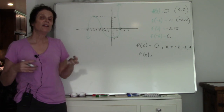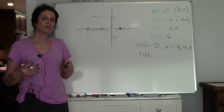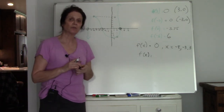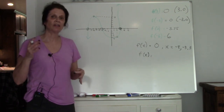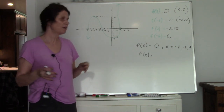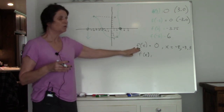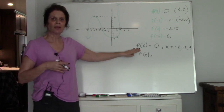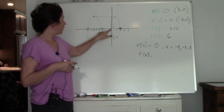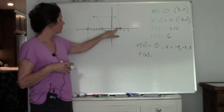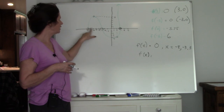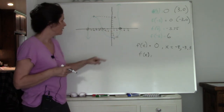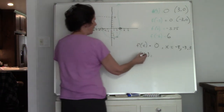If you remember when we were graphing linear equations and finding x and y intercepts, this is exactly what we're doing — identifying x-intercepts, where y is 0. So x is 3, negative 3, and negative 8 — those are the three x-intercepts.